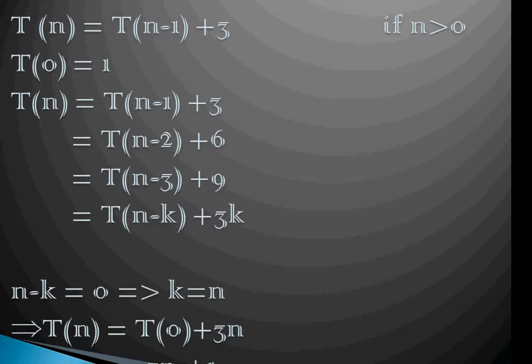Let us try to reduce this expression T(n) in terms of our known value T(0). Now T(n-1) can be written as T(n-2) + 3. So the overall expression will be T(n-2) + 6.